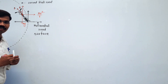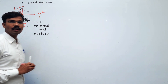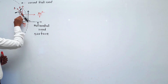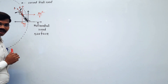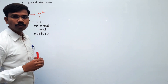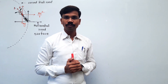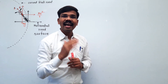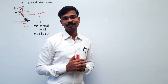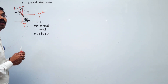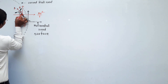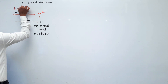So I am going to consider these three forces: first, the weight mg in the vertically downward direction; second, the centrifugal force through the center of mass in the outward direction; and third, the reaction force R inclined at an angle. This reaction force has two mutually perpendicular components.